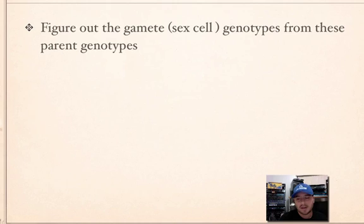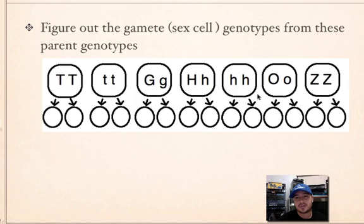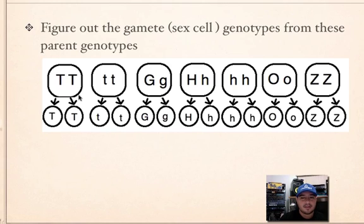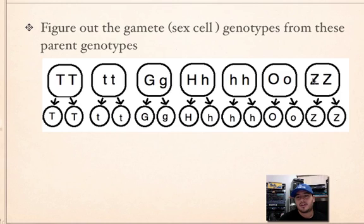Let's do some practice problems. Figure out the gamete or sex cell genotypes from these parent genotypes — these are the parents, obviously diploid body cells. For example, we have big T, big T. What would you do? Just remember, you segregate them. Pause the video right now, practice it, and when you're ready, press resume to see your answers. So how did you do? Check your work — very easy, right? All you do is separate them. You might wonder where are the sperm — well, if I said these two are in the body, you'd put little tails here. So it can be egg cells or sperm cells, depending on which body we're talking about, male or female.